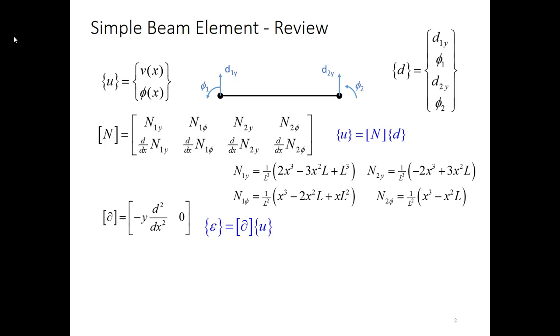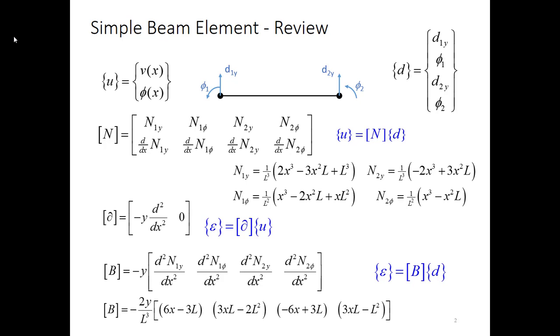We in addition found the relationship between strain and displacement in a beam and we defined it in matrix form as the partial derivative matrix operator minus y d2 dx squared and zero. And then finally we put that together with n in order to find the B matrix. The B matrix is the strain nodal displacement matrix. It's the one that links the degrees of freedom to the strain vector. And then we evaluated the shape functions shown to express the B matrix just in terms of x, y, and L.